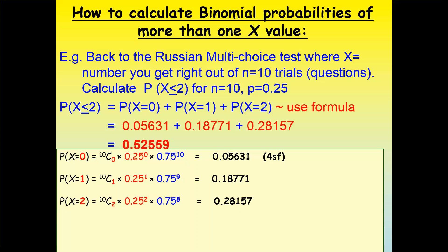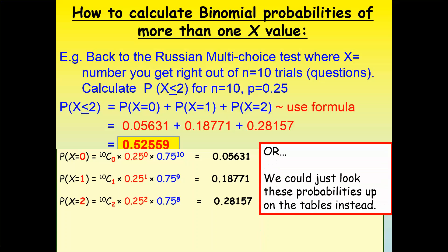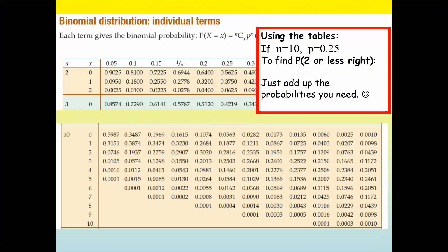When we add them together we get 0.52559, or about 53%. So about 53% of the time you get 2 or less correct out of 10 if you don't speak Russian. That's quite a long way to do it — a much faster way is to use the tables which you get on your formula sheet.